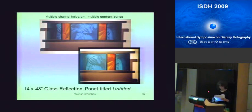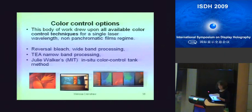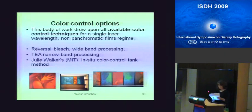Color control options. This body of work drew upon all available color control techniques for a single laser wavelength non-panchromatic film regime. Decisions were based on the expression or content of the images and the type of color they needed. We utilized reversal bleach wideband processing for the figure on the left, triethanolamine narrowband processing for the middle panel, and I even set up the Julie Walker MIT in-situ color control tank — of which there are only about three in the world — used for the large panel Rumors. Decisions on the technical approach to color control were based on the content message of the individual holograms.